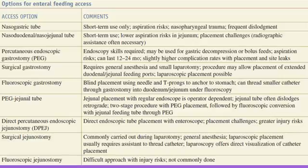Fluoroscopic gastrostomy and fluoroscopic jejunostomy are blind procedures and are not really recommended due to their inherent risks. The PEG-jejunal tube uses a similar technique to PEG gastrostomy and is done by the gastroenterology department. The best option is a surgically placed feeding jejunostomy — a simple procedure that can be done under local anesthesia. The only contraindication to feeding is distal obstruction, so common sense must be applied when feeding after jejunostomy.